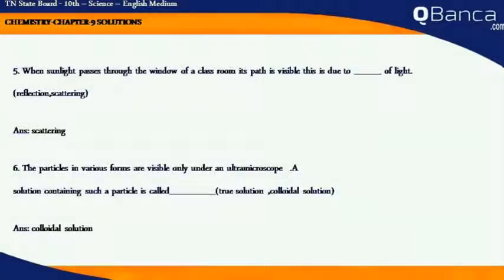When sunlight passes through the window of a classroom, if its path is visible, this is due to scattering of light. The particles in various forms are visible only under an ultra microscope. A solution containing such particles is called a colloidal solution.